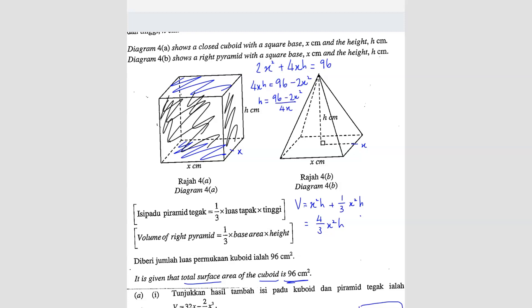You can simplify this further. So you get h = 96 divided by 4x, you should get 24/x minus 1/2x... wait, x/2. So this new equation here, the h, you can substitute into this part to find the volume.